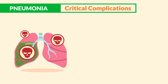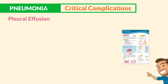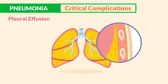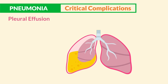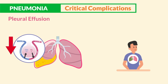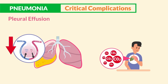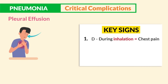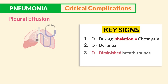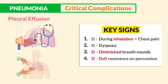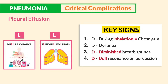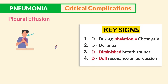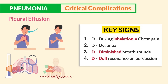For critical complications — priority for the NCLEX: pleural effusion (just think pleural e-fluid) is fluid that fills the pleural space between the lung itself and the chest wall. This prevents full lung expansion, resulting in decreased gas exchange — less oxygen in and less CO2 out — and increased CO2 pushes the body into acidosis. The key signs are the four Ds: D for chest pain during inhalation, D for dyspnea (shortness of breath), D for diminished breath sounds on auscultation, and D for dull resonance on percussion. Remember: fluid-filled is dull — don't let the NCLEX trick you with hyperresonance, which is high air trapping. Write down these four, as they come up frequently on select-all-that-apply questions.